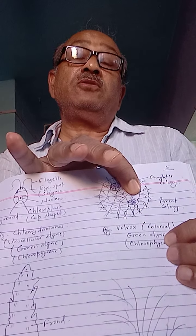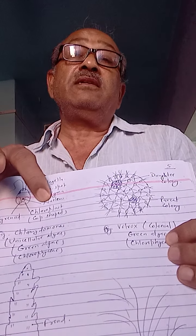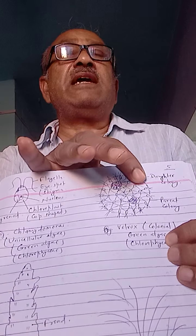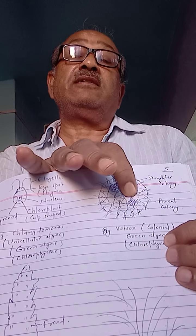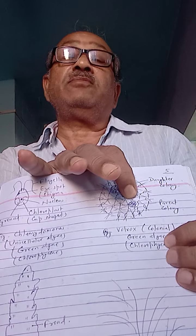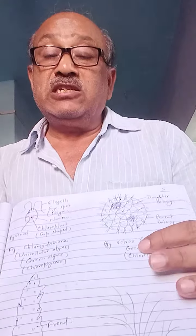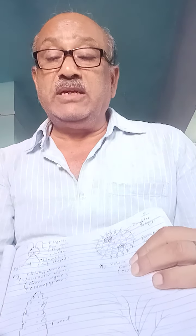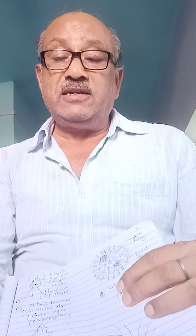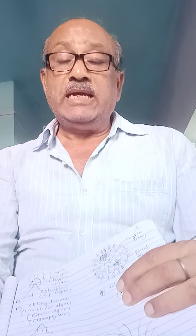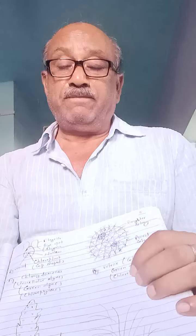In Volvox, there are Chlamydomonas-type cells which are connected with cytoplasmic strands. This is the figure of Laminaria. This is parenchymatous algae and a member of Phaeophyceae, that is brown algae.